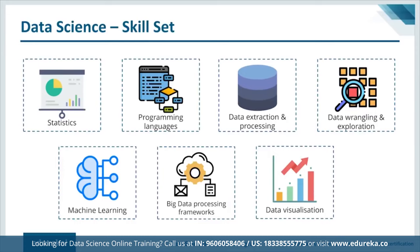Next is data extraction and processing. Suppose you have multiple data sources like MySQL and MongoDB — you have to extract data from such sources, store it in a proper format or structure, and load it into a data warehouse for analysis. This entire process is called extraction and processing. Data wrangling is one of the most difficult and time-consuming tasks in data science, because it's all about cleaning the data. Data sets often have missing values, null values, or inconsistent formats that need to be handled. After data wrangling and cleaning, you start exploring — looking at different patterns, trends, outliers, and unexpected results in the data.